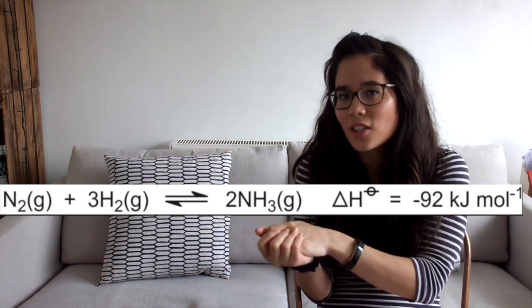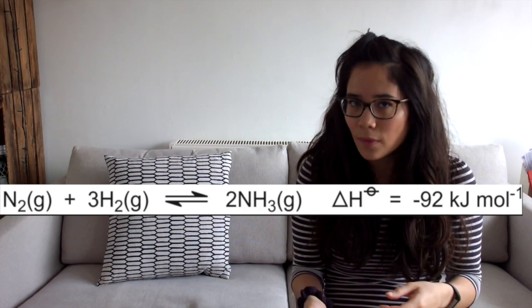Looking at the Haber Process, the forward reaction is exothermic, so to favour that forward reaction we decrease the temperature in order to produce a high yield. We say the equilibrium position moves to the right because the forward reaction is exothermic, and that's how you need to word these answers. However, from collision theory, we know that low temperatures are a bad idea, because particles won't collide very often or with much kinetic energy — they'll just be drifting around. So we say the reaction conditions in the manufacture of ammonia are compromised.